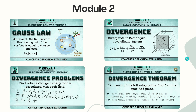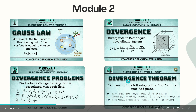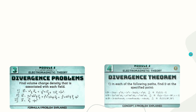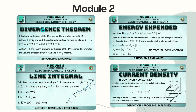From module 2 we have dealt with Gauss's law, then divergence with related problems, and the divergence theorem with problems. We also covered energy expanded, line integrals, and current density. From each of these topics, one derivation and problems have been discussed.